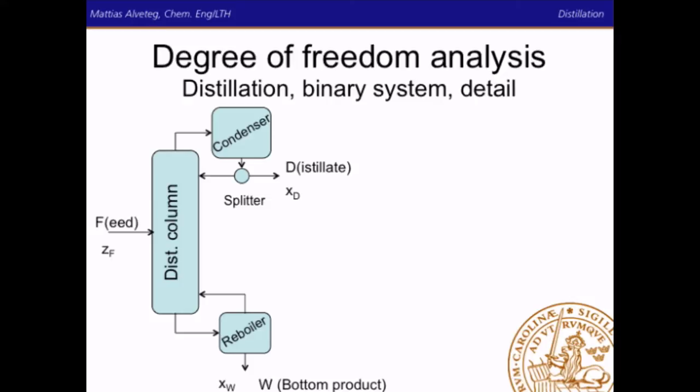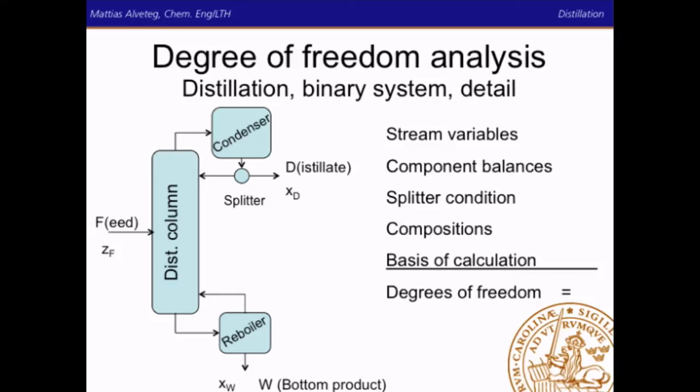For the detailed system we have stream variables, component balances, a splitter condition, compositions, and basis of calculation. We have two components in each flow and eight different flows, so eight times two equals sixteen stream variables. We have two components and four subsystems, which gives minus eight component balances. We have one splitter condition, three compositions given, and one basis of calculation, giving three degrees of freedom.